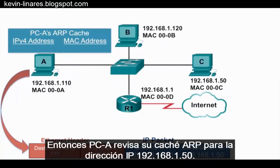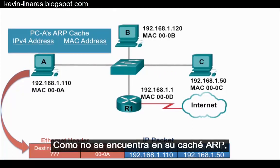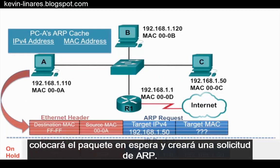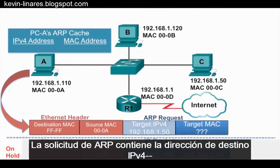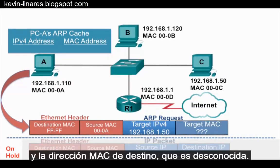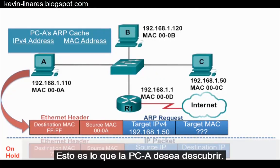PCA checks its ARP cache for the IP address 192.168.1.50. Because it is not in its ARP cache, it will put the packet on hold and create an ARP request. The ARP request contains the target IPv4 address, which is known by PCA, and the target MAC address, which is unknown — this is what PCA is wanting to find out.